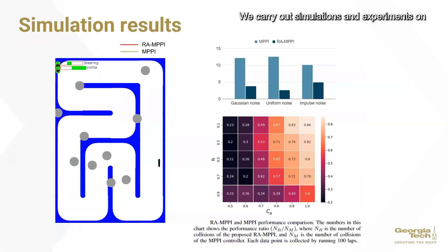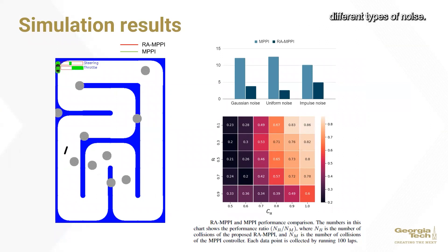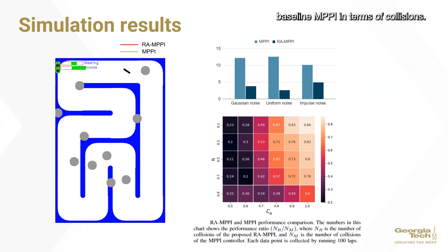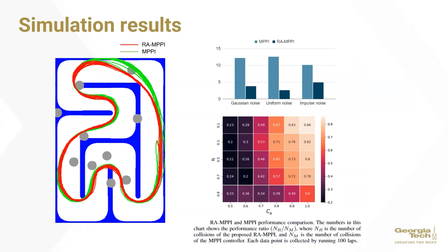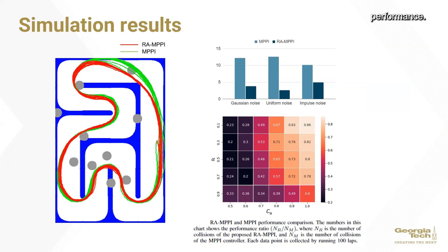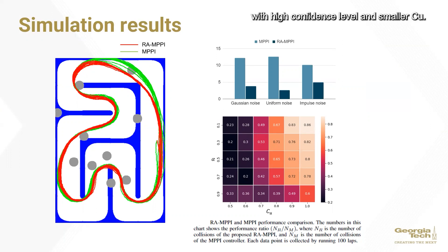We carry out simulations and experiments on an autonomous racing platform using different types of noise. On average, the RNPPI outperforms the baseline MPPI in terms of collisions. Moreover, we use different alpha and CU values for the RNPPI and compare the resulting performance. From the heat map, we see that RNPPI tends to perform better with high confidence level and smaller CU.